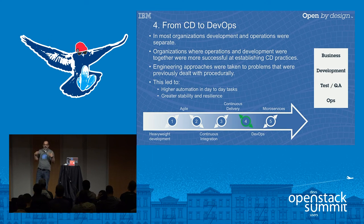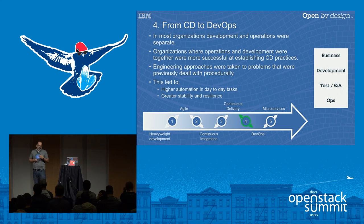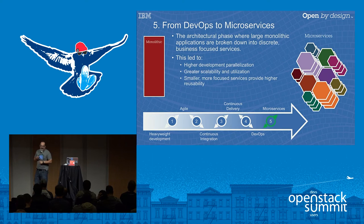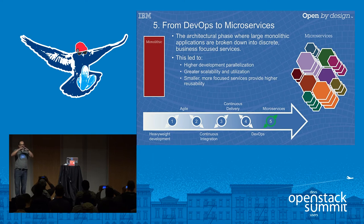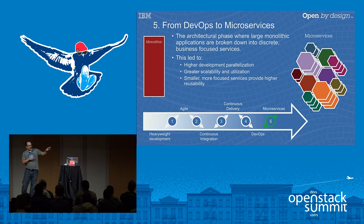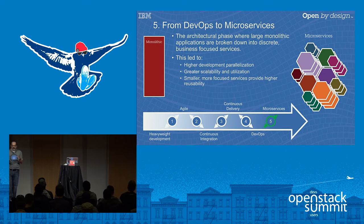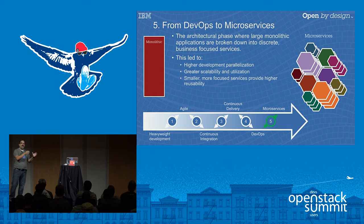At the end of this move from continuous delivery to DevOps, you had greater resiliency and higher automation of day-to-day tasks. The last big move was making technological changes based on virtualization, organizational changes, and methodology changes. The final big change we've been seeing in the last couple of years is this move from monolithic applications to microservice applications.